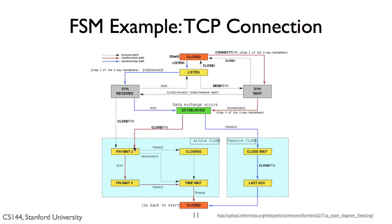First, the passive closer might acknowledge the FIN but not send a FIN. In this case, the passive closer is in the close wait state and can continue to send data. This is the lowermost edge, where the active closer enters the FIN wait 2 state. Second, the passive closer might close its side too — acknowledging the FIN and sending a FIN of its own. This is the middle edge, to the time wait state. Finally, it could be that both sides actively close at almost the same time and send FINs to each other. In this case, both are in the FIN wait 1 state. Each one will see a FIN from the other side that doesn't acknowledge its own FIN, so we transition to the closing state. When our FIN is acknowledged, we transition to the time wait state, just as with the middle edge.